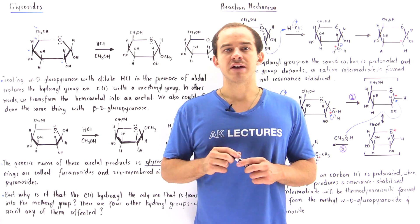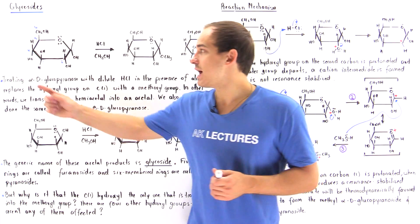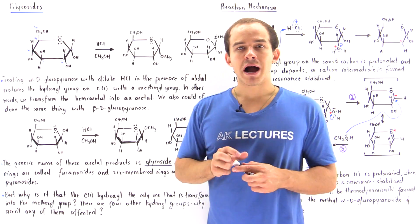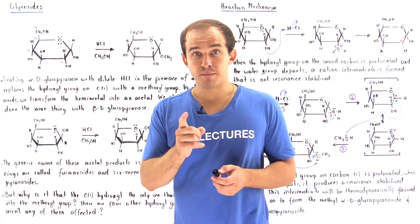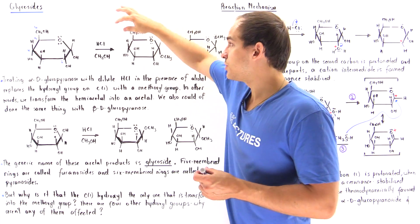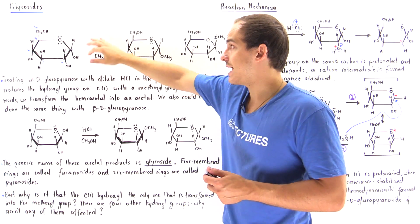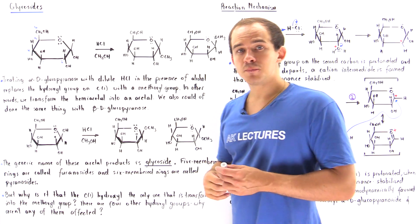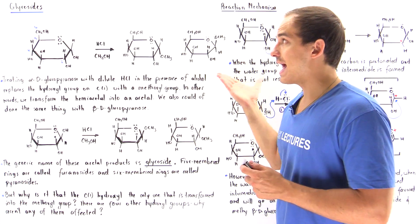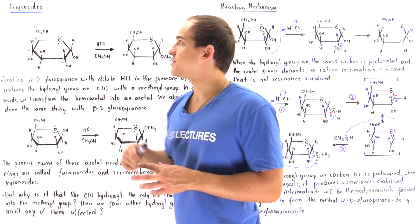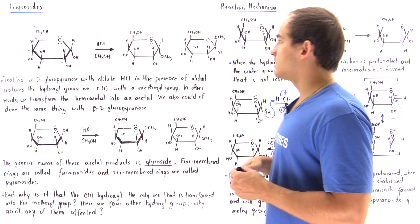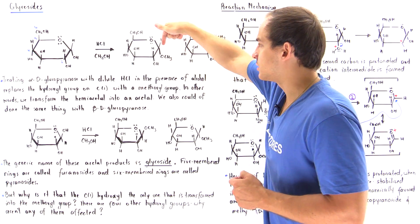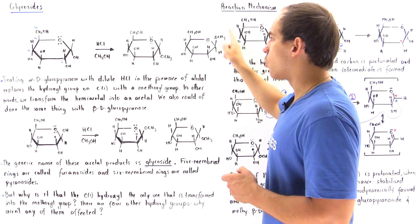There are two types of anomers: the alpha and the beta D-glucopyranose. In each case, if we mix it with dilute hydrochloric acid (HCl) in the presence of alcohol, we produce our acetal products known as the glycosides, where our methoxy group points either down or up.